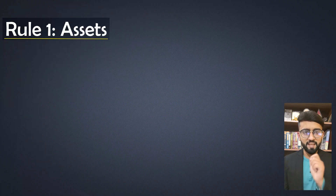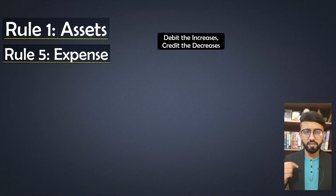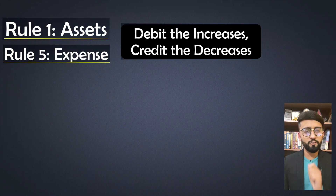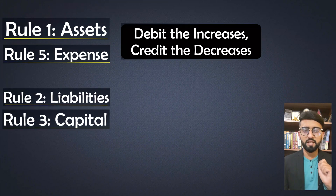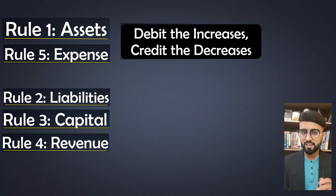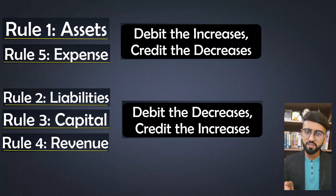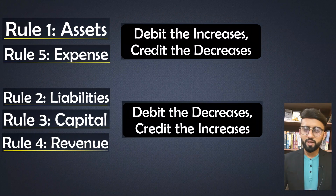To summarize: the rules for assets and expenses are the same — debit the increases and credit the decreases. And the rules for liabilities, capital, and revenue are the same — debit the decreases and credit the increases.